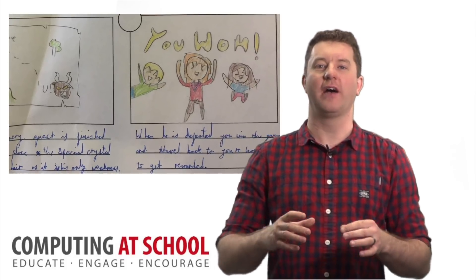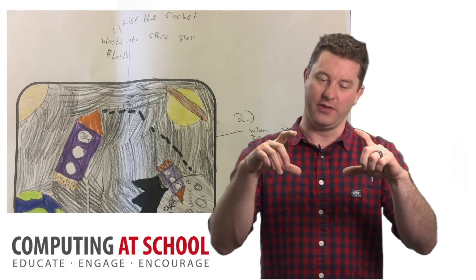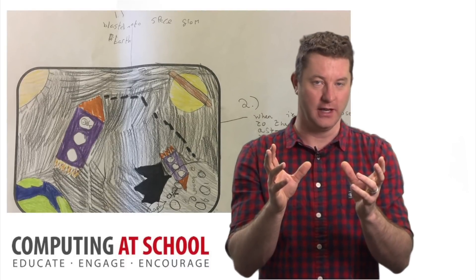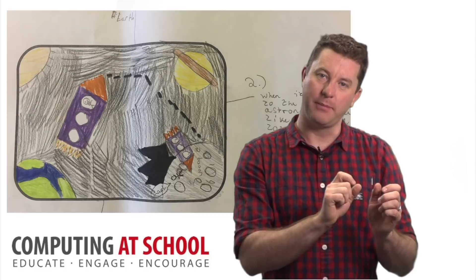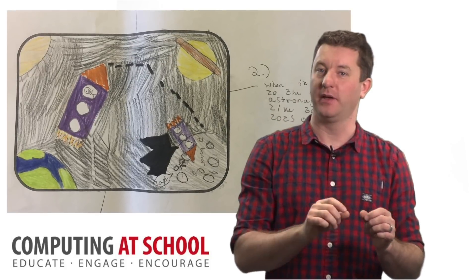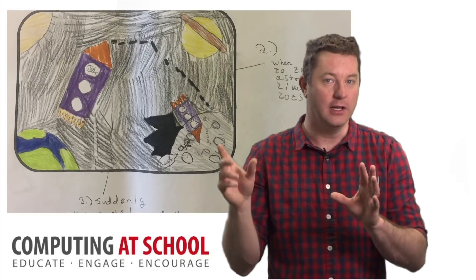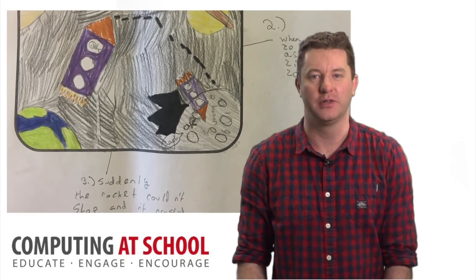You could also have a central concept map idea where you would get the children to perhaps design their screen, what it will look like, and then around the edge start to number what will happen step by step. Again reminding them of the sequence, any loops they would like and also making sure it's clear and precise.